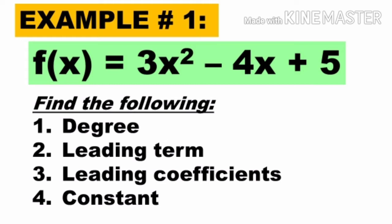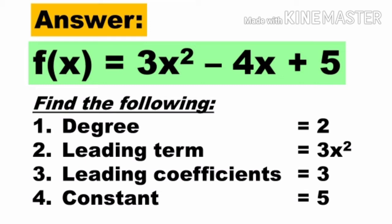Example number 1: f(x) = 3x² - 4x + 5. Find the following: the degree, the leading term, leading coefficient, and the constant term. Okay, the degree — ito yung pinakamataas na exponent sa polynomial function natin, so kung ano yung pinakamataas na exponent na nakikita natin. In this example, the degree is 2. The leading term — ito yung term na may pinakamataas na exponent, which is 3x². The leading coefficient — ito yung coefficient ng leading term natin, which is 3. And the constant — ito yung walang kasamang variable, which is 5.